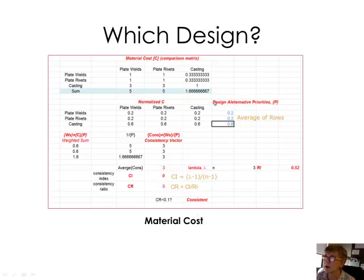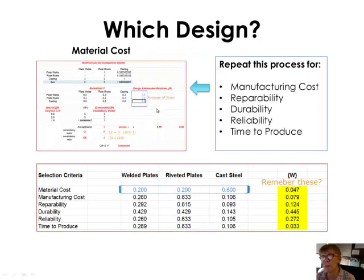When I get through, I'm going to have a set of six of these, a priority vector for each criteria that we're looking at. So this is the priority vector for material cost. I'm going to combine all of those priority vectors into another matrix. I'm going to have another six by six, or a six by three matrix. So here's material cost. These are the numbers I just derived for material cost, 0.2, 0.2, and 0.6.